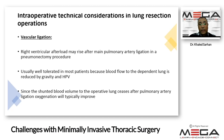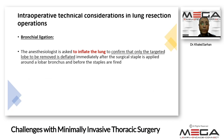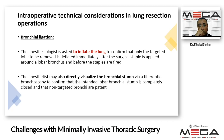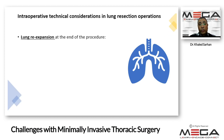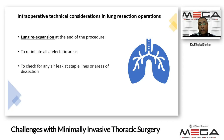Once the shunted blood stops, oxygenation will improve and typically improves after ligation of the pulmonary artery. During bronchial ligation, the anesthesiologist is asked to inflate the lung to confirm that only the targeted lobe to be removed is deflated after application of the surgical staple and before firing this staple. We can do a Valsalva maneuver to inflate the lung. We can also directly visualize the bronchial stump using fiber optic to confirm that the intended lobe is completely closed and that the non-targeted lung is patent. At the end of the procedure, we have to re-inflate all atelectatic parts and visualize together with the surgeon that there is no air leak at the staple line or areas of atelectasis.